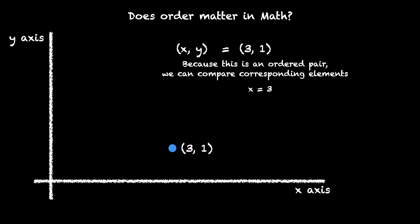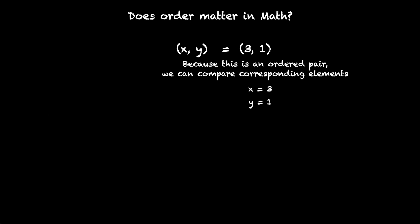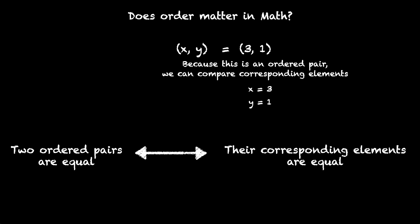And then y equals 1, comparing their second elements. This goes the other way around as well. When two ordered pairs are equal, we can say their corresponding elements are equal. And when their corresponding elements are equal, the ordered pairs are equal. So this works in both directions.